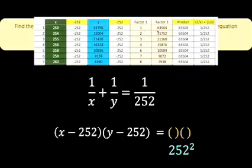So for the first factor, we can have 1 times 63,504. If the first factor is 1, x minus 252 must have a value of x equals 253, so that 253 minus 252 is equal to this factor 1.